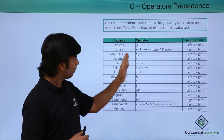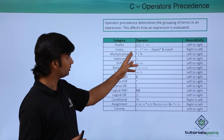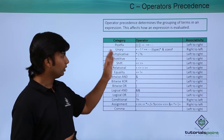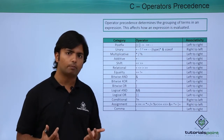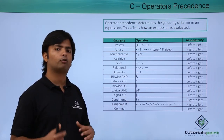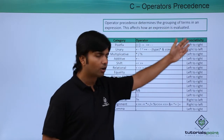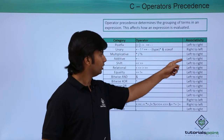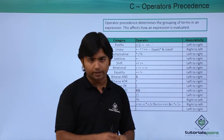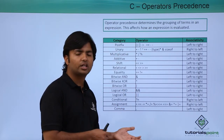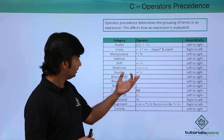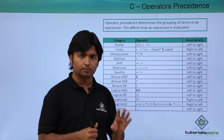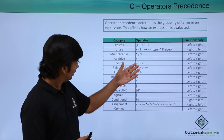After multiplicative, we have plus and minus, both having the same precedence level. Similarly, multiplication, division, and modulus all share the same precedence. When multiple operators of the same precedence appear in a statement, we apply associativity. For arithmetic operators, the associativity is from left to right — so in a statement like a+b-c, a+b will be evaluated before b-c.